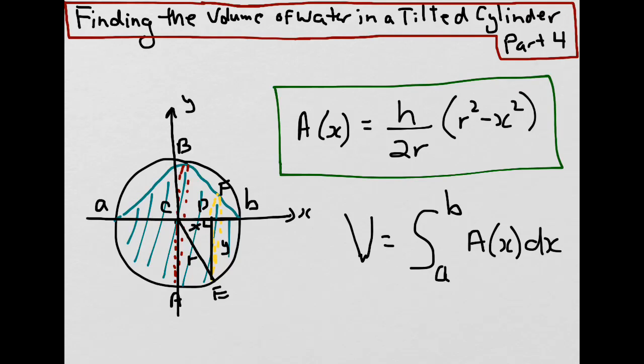From our diagram, any line drawn from the center to the outside of the cylinder is the distance r. So a can be written as -r, and b can be written as positive r. So our formula becomes the integral from -r to positive r.